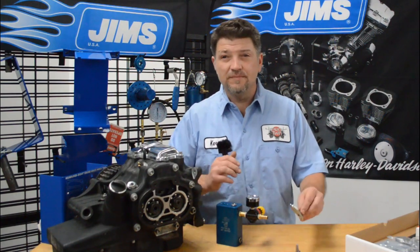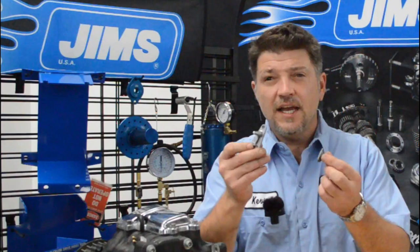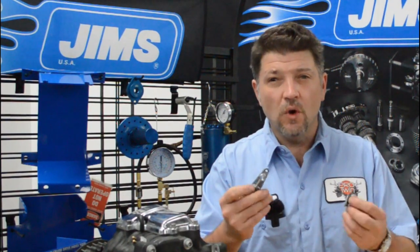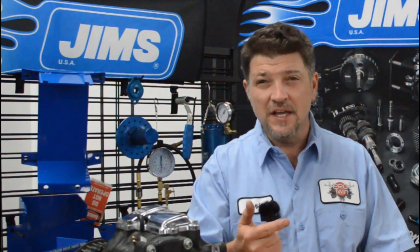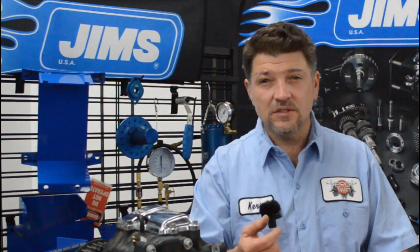Piston jets were first introduced in the twin cam and have carried over to the M8. They're a cast aluminum nozzle with a little ball and spring on the inside, and it acts like a check valve. Oil is fed through the cam plate, then through the engine case to the lifter bores, and finally to the piston jet, which sprays oil on the bottom of the piston.